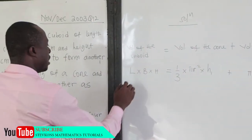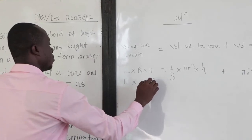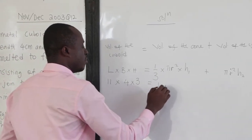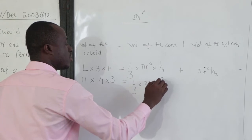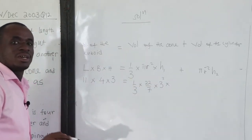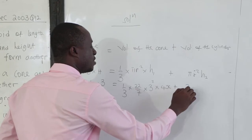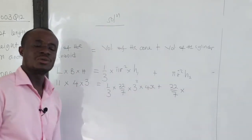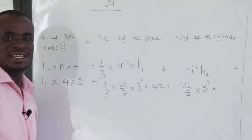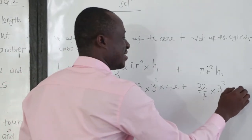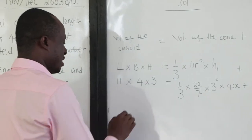From the question, the length of the cuboid is 11, the breadth is 4, and the height is 3. The height of the cone is 4x. Using π = 22/7 and radius = 3, so r² = 9. The height of the cylinder is x. Now, 11 × 4 × 3 = 132.